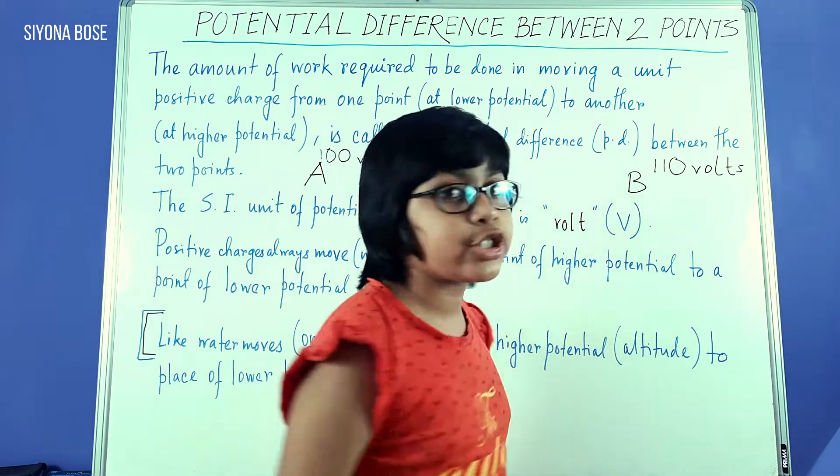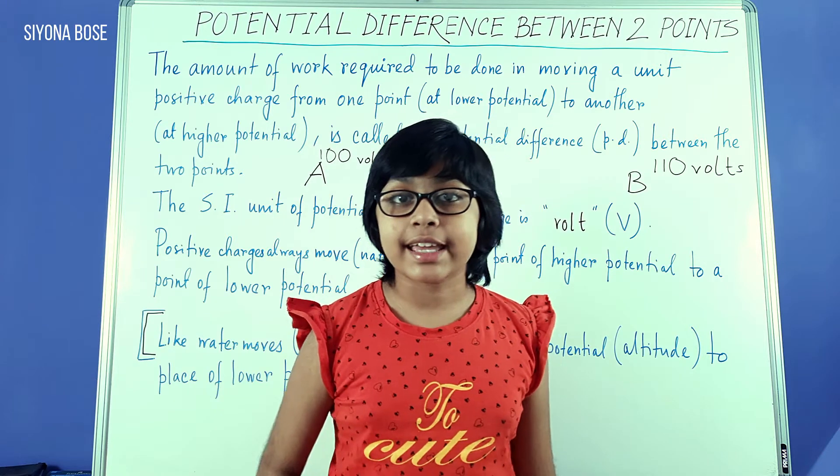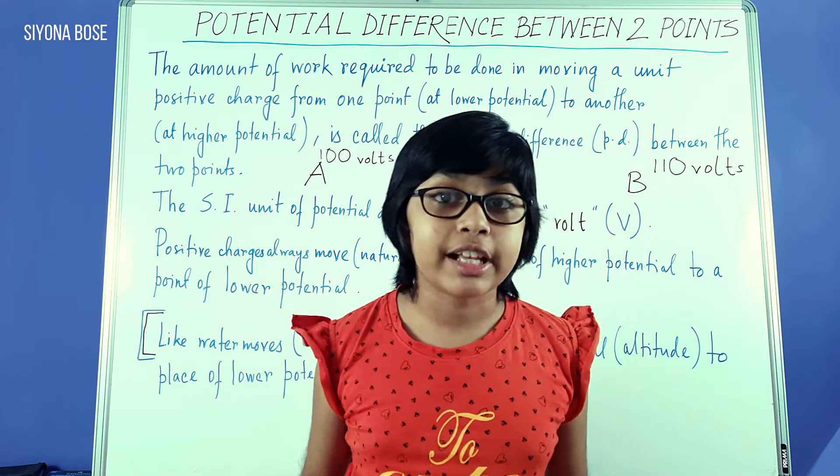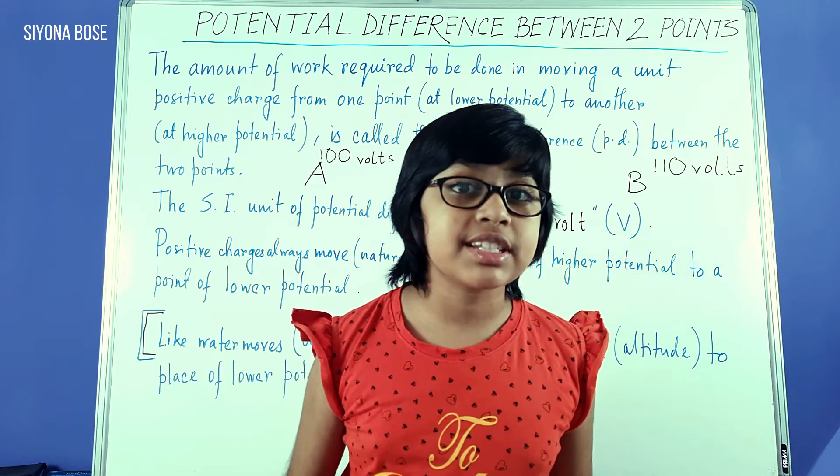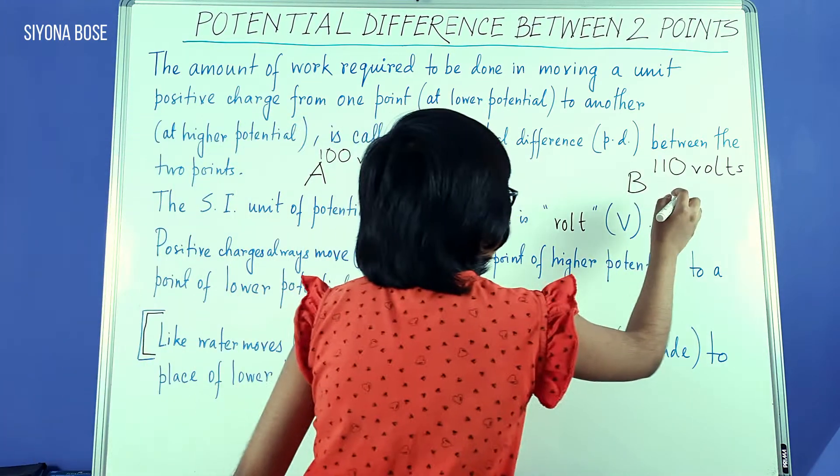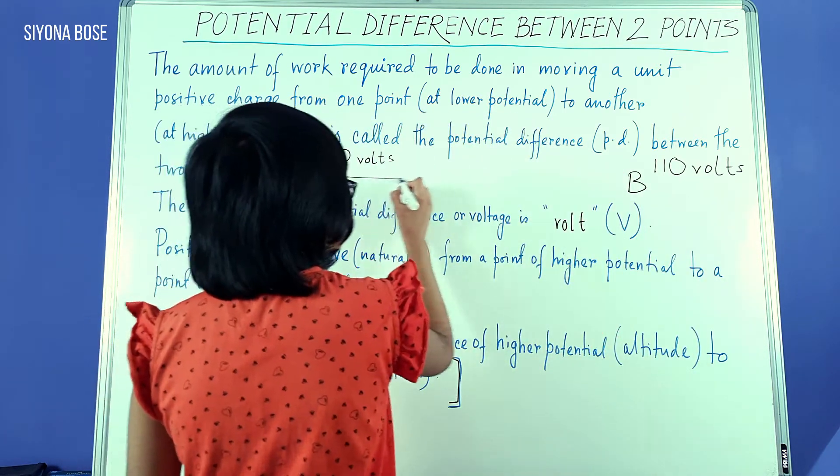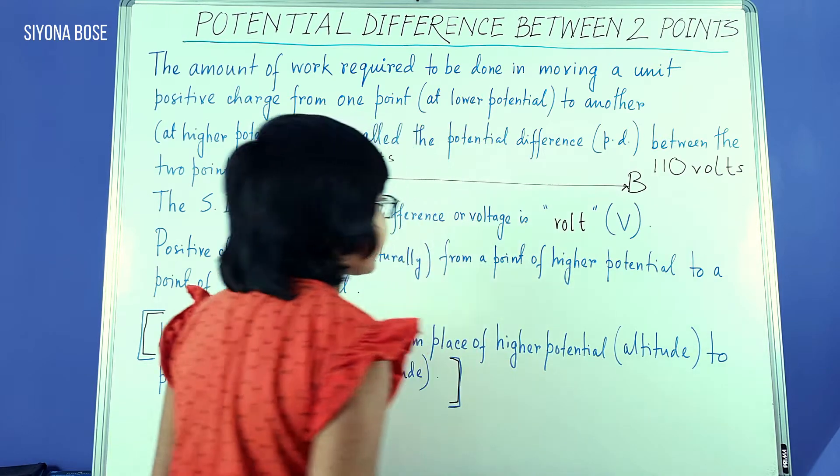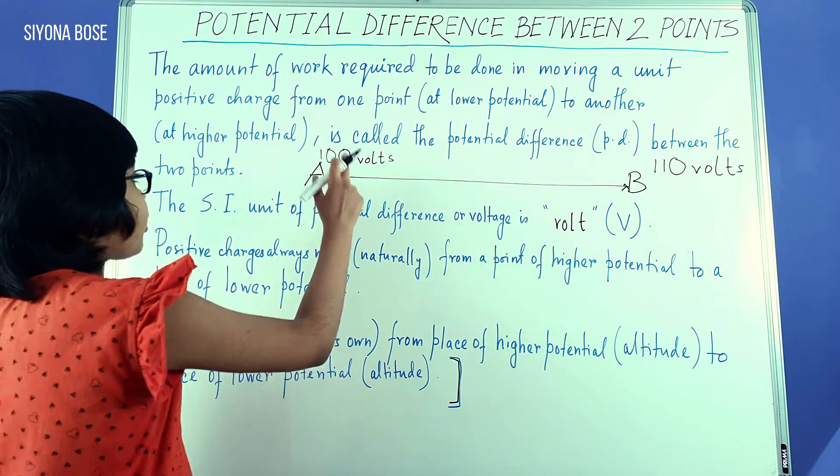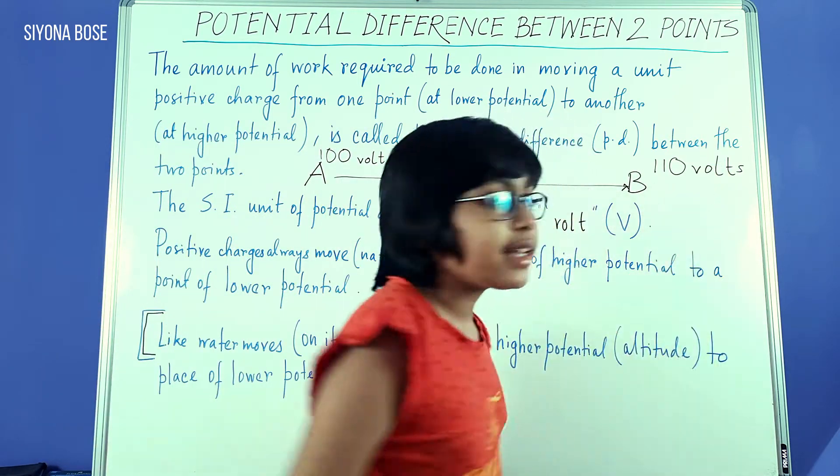Now, let's say I want to shift this unit positive charge. Since they're in the same electric field, if I want to shift this unit positive charge from point A to point B, that is 100 volts to 110 volts, like this, I'm shifting it, then it would take 10 joules of work, because it took 100 joules of work to reach A and 110 joules of work to reach B.